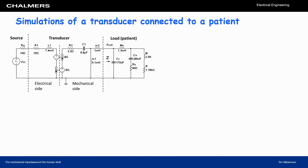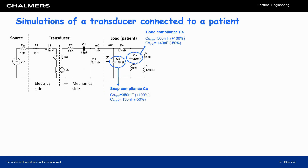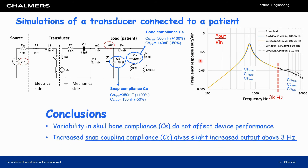We also need a model of the transducer to connect it to the patient model. Here we can give both the skull bone compliance and the snap coupling compliance some extreme values. The skull bone compliance does not affect device performance up to three kilohertz. The snap coupling compliance can cause some attenuation at higher frequencies when being softer.